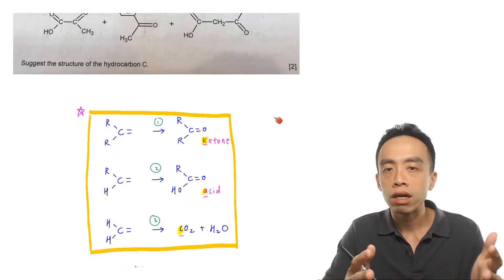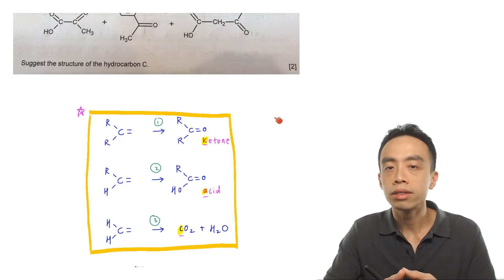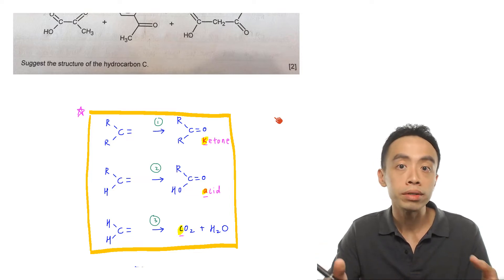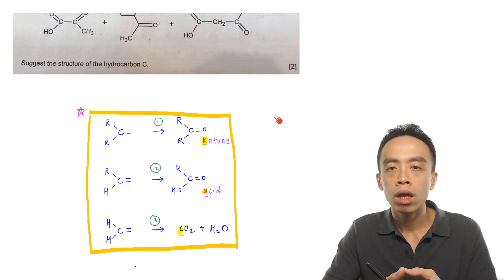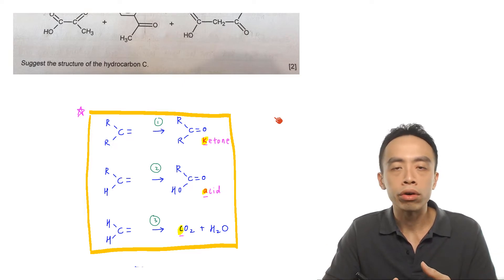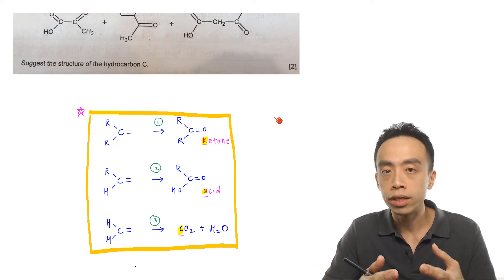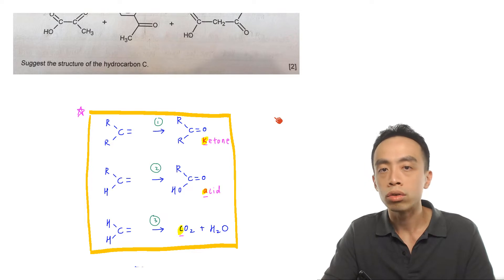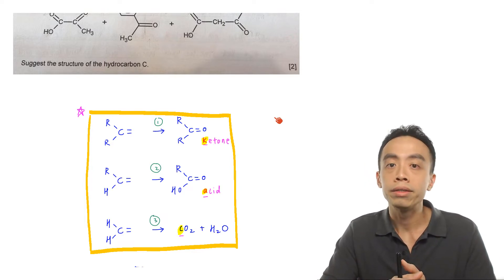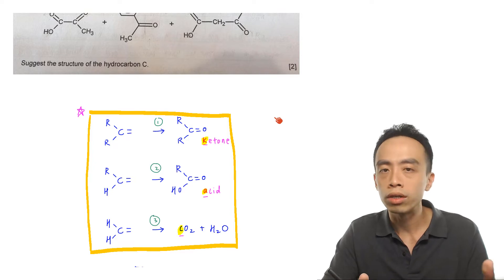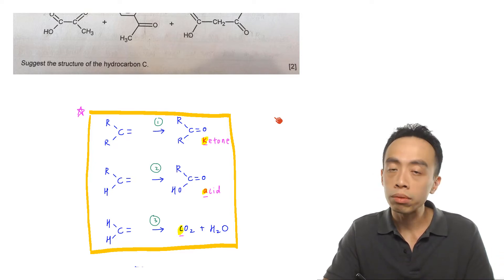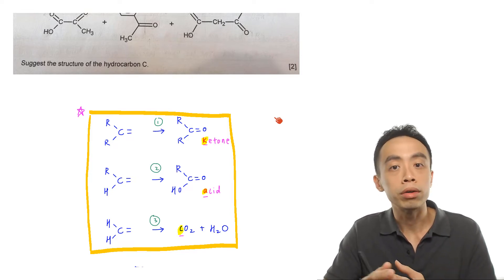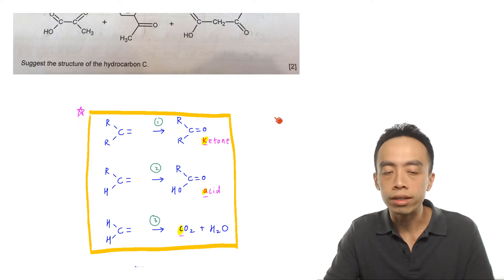If I have a C double bond C and it is subjected to hot acidified KMnO4, strong oxidation will occur — the C double bond C bond would cleave — and what products are formed is actually dependent on the groups attached to the alkene carbon. I actually had a previous video on strong oxidation of alkenes, so if you are interested in the reaction in detail and some simpler examples, do take a look at that video.